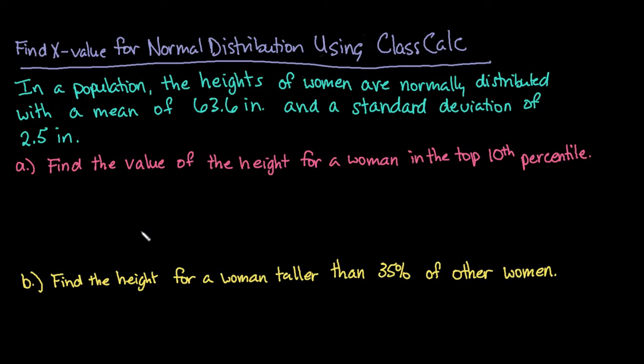Hi. For this video, what I want to do is show you how to find the random variable x or the x value for a normal distribution using a free online graphing calculator called ClassCalc. You can find this at classcalc.com backslash graphing calculator.